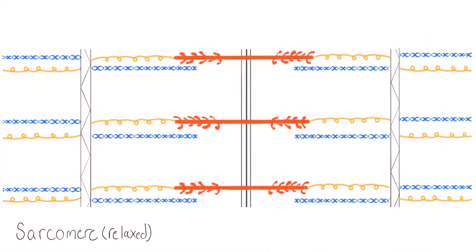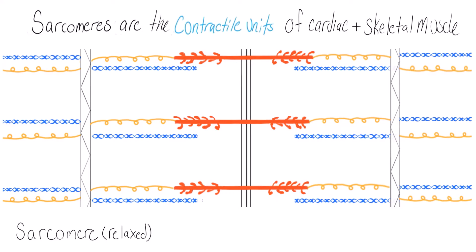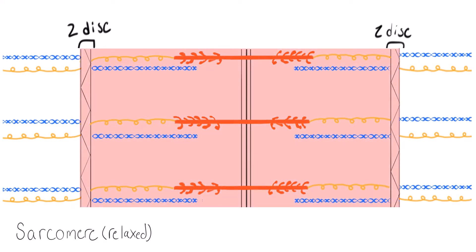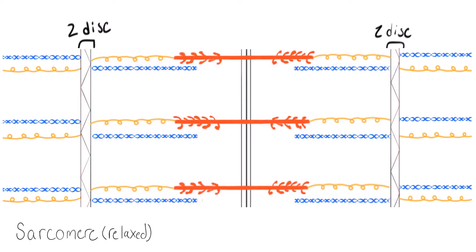The sarcomere is the contractile unit of both cardiac and skeletal muscle. You only see these in cardiac and skeletal, not smooth. Sarcomeres are separated by Z-discs, so the space between two individual Z-discs is the sarcomere. The middle of the sarcomere has something called an M-line — it's just the midline anchor point of the sarcomere.